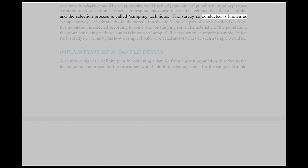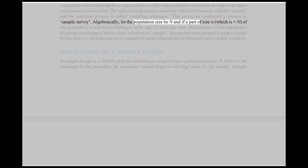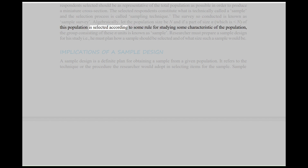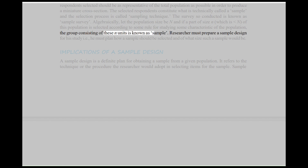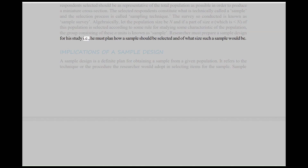The selected respondents constitute what is technically called a sample and the selection process is called sampling technique. The survey so conducted is known as a Sample Survey. Algebraically, let the population size be N and if a part of size n is selected from this population according to some rule for studying some characteristic of the population, the group consisting of these n units is known as a sample. The researcher must prepare a sample design for his study, i.e. he must plan how a sample should be selected and of what size such a sample would be.